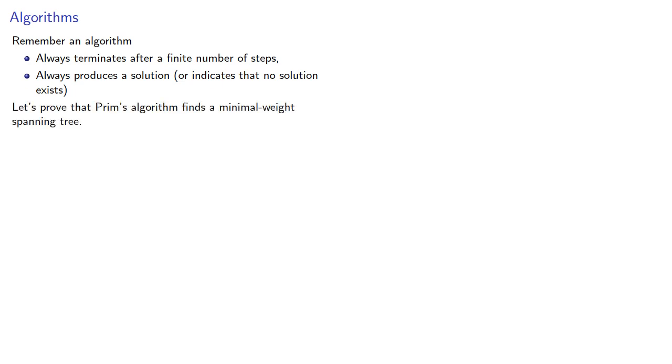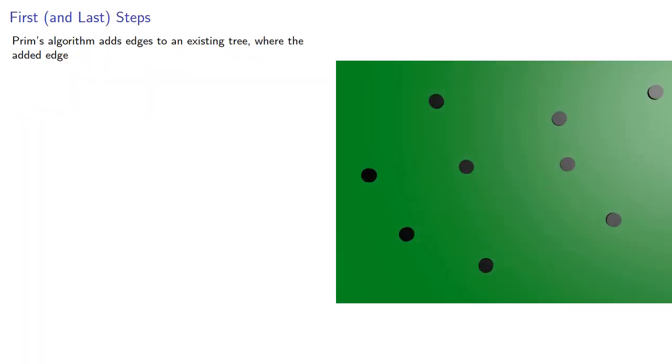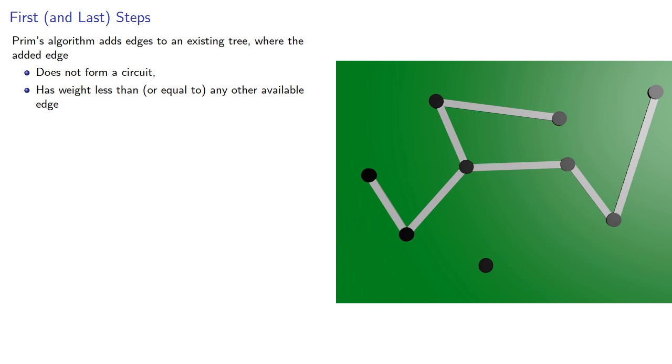Let's prove that Prim's algorithm finds a minimal weight spanning tree. Prim's algorithm adds edges to an existing tree where the added edge does not form a circuit, and has a weight less than or equal to any other available edge.